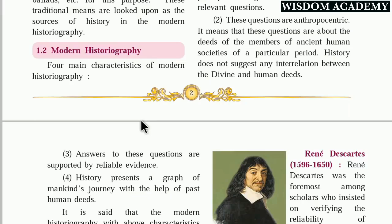Welcome to the second part of the chapter on historiography development in the west. In the first part we studied the difference between historical study and life sciences — in life sciences we use laboratory method, while in history we check various information from all angles. In the second part we will study about modern historiography and its four main characteristics.